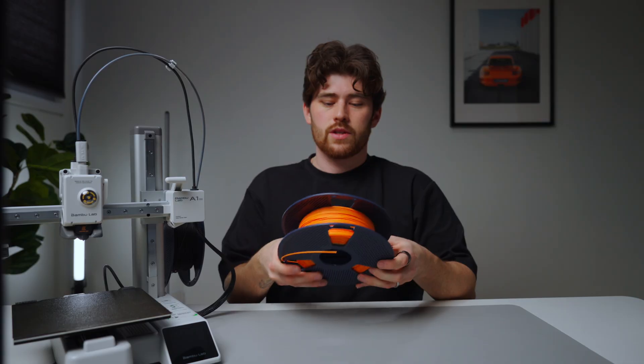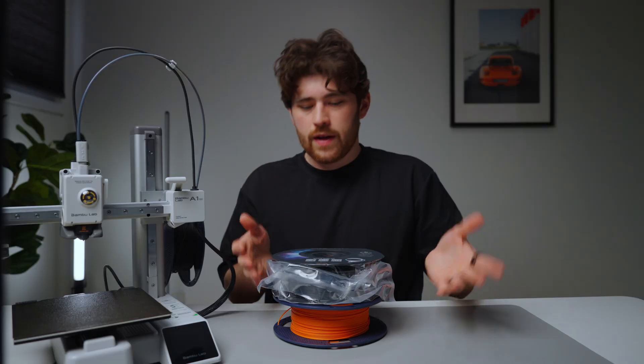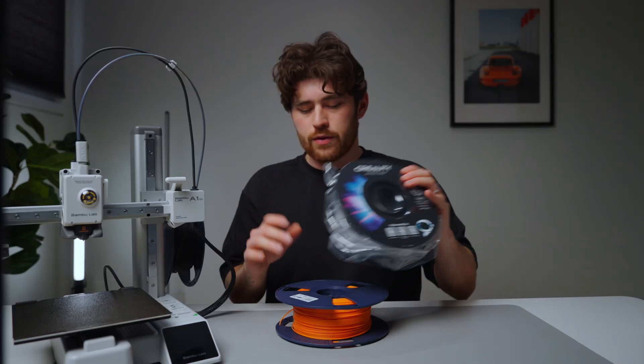The A1 Mini can actually print quite a few materials. So we can print PLA, we can print PETG, which is right here. And then you can also print TPU. But those are kind of the three that they recommend.